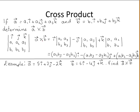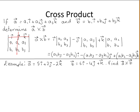The cross product is then found as follows. A crossed with B is equal to: we take our first entry in the first row which is i, and multiply it by the determinant of the following matrix — ignoring the row and column that i is in. Then minus j times the determinant of the following matrix — ignoring the row and column that j is in. And plus k times the determinant of this matrix — ignoring the row and column that k is in.